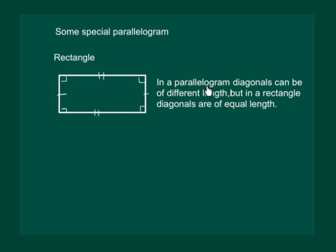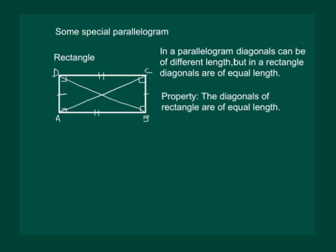In a parallelogram, diagonals can be of different lengths, but in a rectangle, diagonals are of equal length. That means both diagonals will have equal length if it is a rectangle. Let us draw the diagonals and try to prove the property that the diagonals of a rectangle are of equal length — that means we would like to prove that AC is equal to BD.